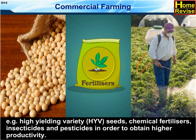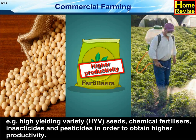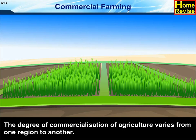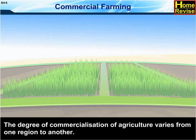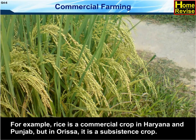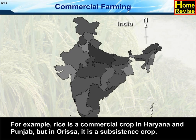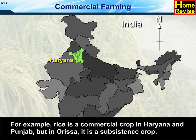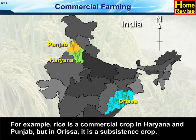In order to obtain higher productivity, the degree of commercialization of agriculture varies from one region to another. For example, rice is a commercial crop in Haryana and Punjab, but in Orissa, it is a subsistence crop.